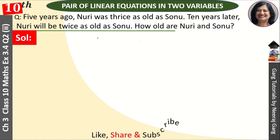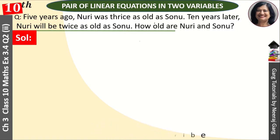The problem: 5 years ago Nuri was thrice as old as Sonu, and 10 years later Nuri will be twice as old as Sonu. How old are Nuri and Sonu? Let the present age of Nuri be X years and the present age of Sonu be Y years.